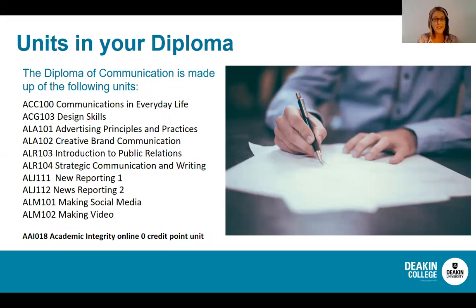There are 10 units available — two core units and eight elective stream options. Overall, you will complete eight of these units. Through the Diploma, you undertake learning in the areas of advertising and marketing, design, PR strategies, engaging with digital media and journalism. This flexible approach prepares you for various adaptable roles in the communication field, and allows you to specialise in the area you are most passionate about as you progress through your degree.